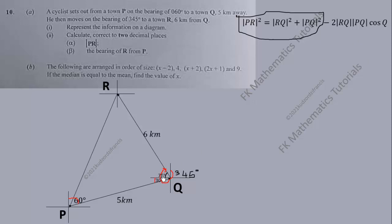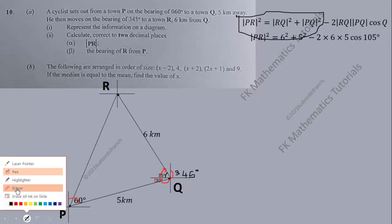So if that is the case, we need to substitute this angle here, which is 30 plus 75, which is 105 degrees over here. Then we substitute RQ, which is 6, and PQ is 5. So we need substitution.